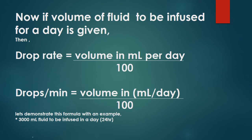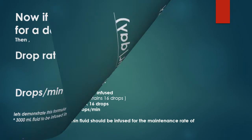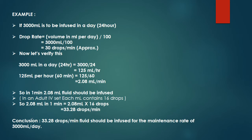Now if the volume of fluid to be infused for a day is given, the formula for drop rate calculation is: drop rate equals volume in milliliters per day divided by 100. Example: if 3000 milliliters of fluid is to be infused in a day (24 hours), drop rate = 3000 ÷ 100 = 30 drops per minute approximately.